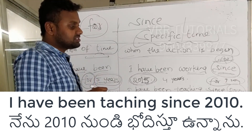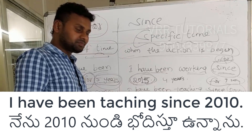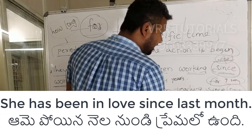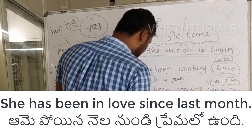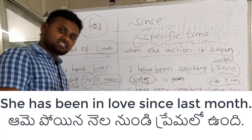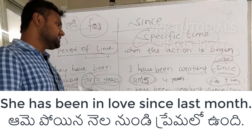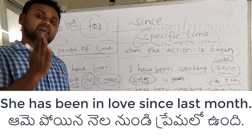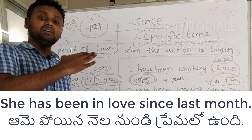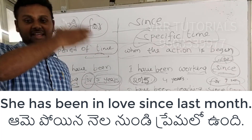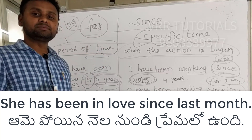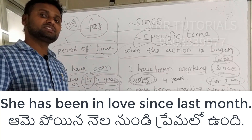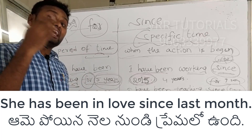Next: she has been in love since last month. 'Since' is also used with expressions like since last month, since December, since yesterday, since morning, since his childhood — all specific points in time.